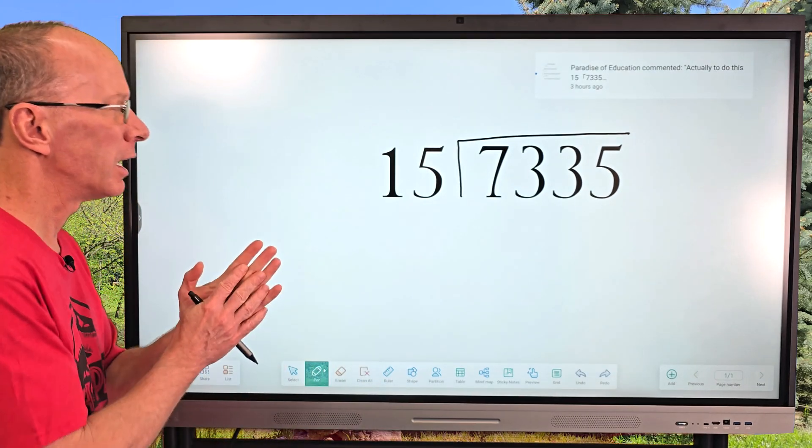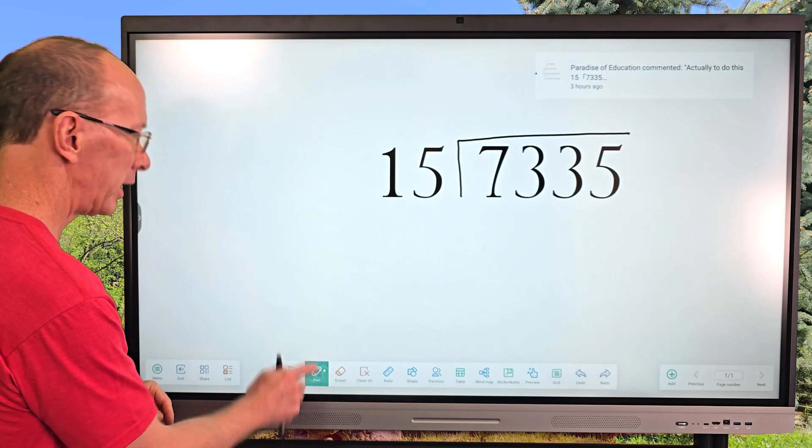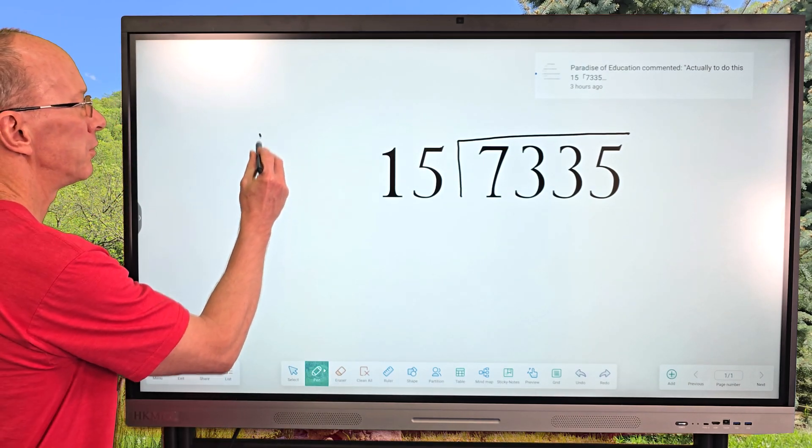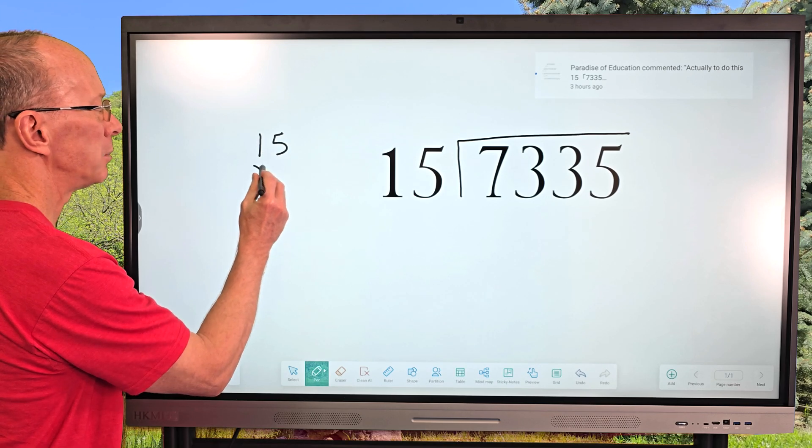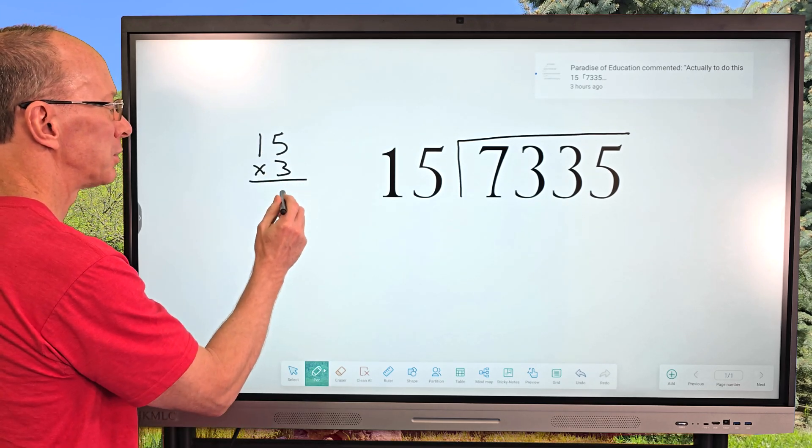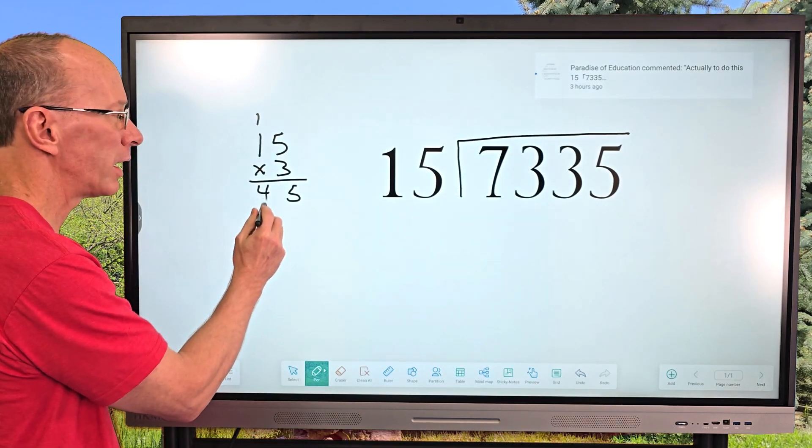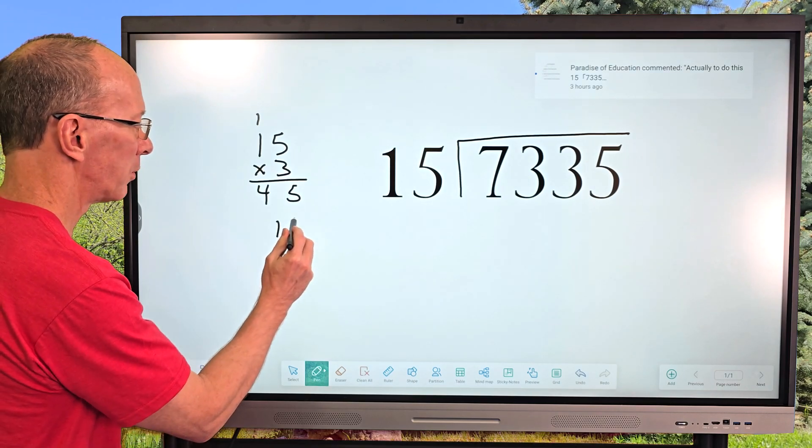All right. So first of all, I think off to the side, I might do a little bit of figuring right here. So I might go ahead and do 15 times 3. So 15 times 3, 5 times 3 would be 15. Carry the 1 and 3 times 1 is 3 plus the 1 is 45. And let's go ahead and do a couple more here.